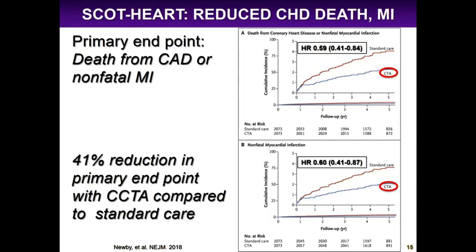Regarding scanner technology: initial studies like PROMISE used 64-slice CT scanners, and more recent ones use 256-slice scanners — significantly better. At UW the machines we use are GE Revolution. A coronary CTA is 3 millisieverts, a calcium score is 1, FFR CT requires no additional radiation, and CT perfusion with SCADA acquisition is approximately 5 millisieverts — compared to a SPECT study at about 10 millisieverts.